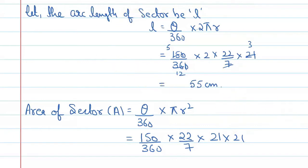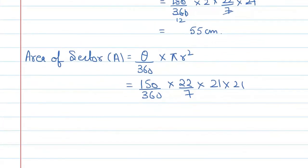Now, if you find this value, then you will get 1155 upon 2 and if we solve it, then you will get 577.5 cm. Alright?